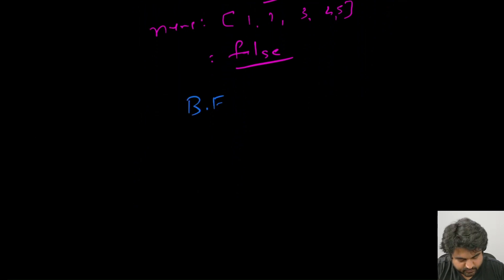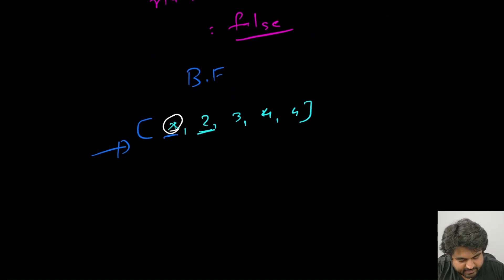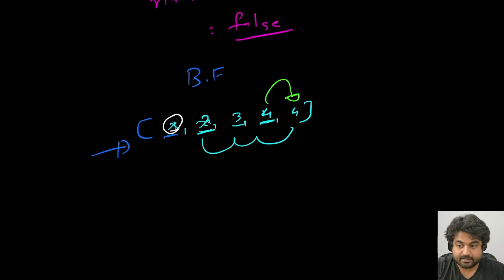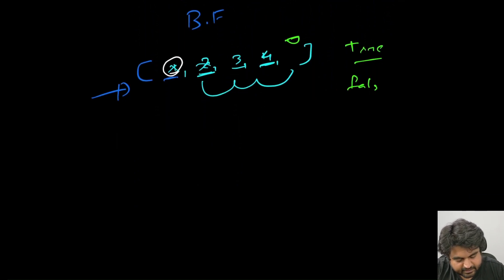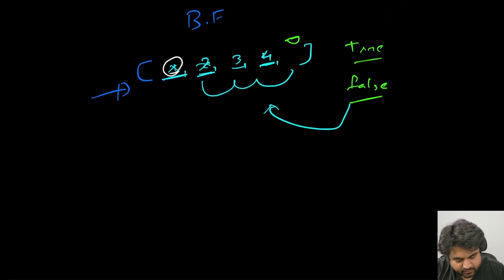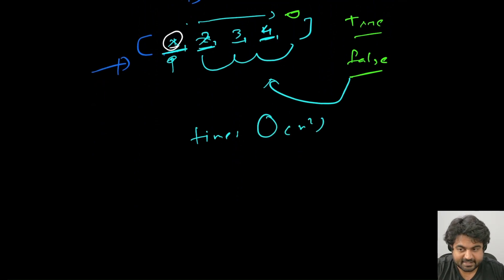The most common brute force approach is to take the first value and check it against every single other value. We identify that one is not present, move on to two, repeat for three, and at four we realize there is a repeated value — a duplicate — so we return true. If we reach the end without finding duplicates, we return false. The issue with this approach is that the time complexity is O(n²), which is pretty expensive.